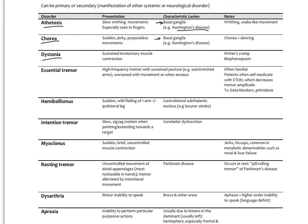Essential tremor is a high-frequency tremor with sustained posture, like an outstretched arm, worsened with movement or when anxious. This is often familial and doesn't signify deeper neurological problems, so it's considered fairly benign. Patients often self-medicate with alcohol, which decreases tremor amplitude, and beta blockers — which block the sympathetic nervous system — are typically given as therapy.